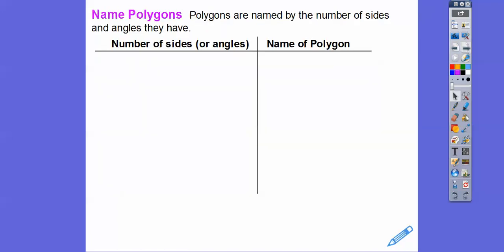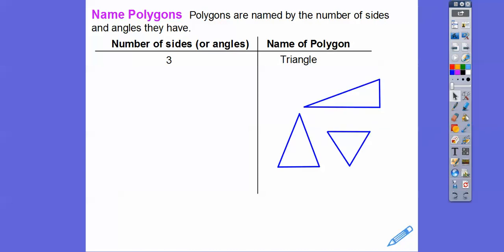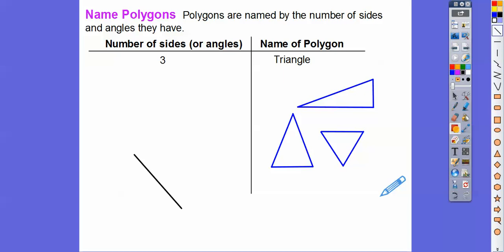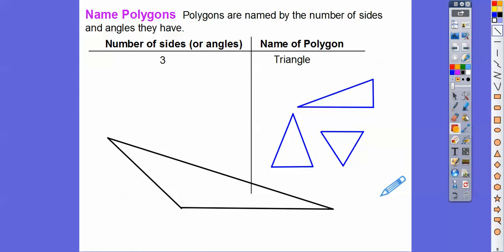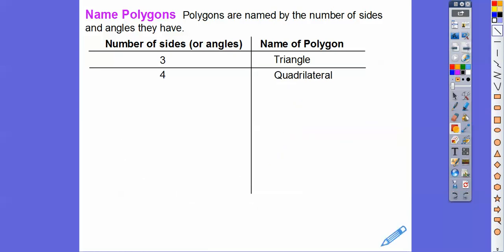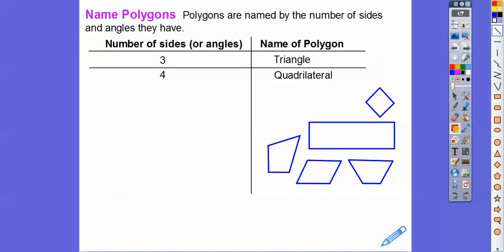Now we're going to talk about the number of sides a polygon has and the name of the polygon. The first polygon we can make with the least number of sides is a triangle — triangles have three sides and three angles, the same number of each. Here are three examples; there are all kinds of triangles you can make, even a goofy-looking one. Four-sided figures are called quadrilaterals. Squares and rectangles are just some examples of quadrilaterals — it just has to have four sides and be a closed shape made up of line segments.